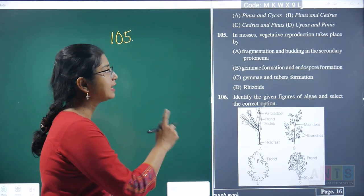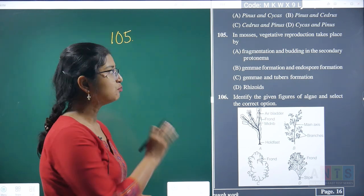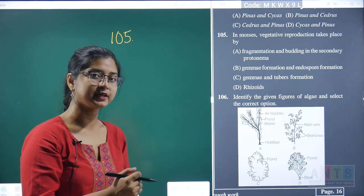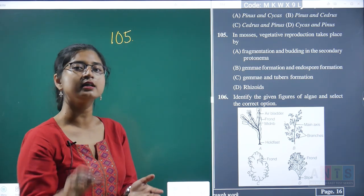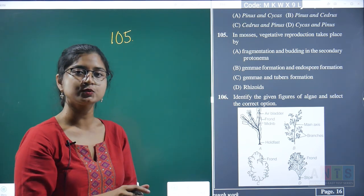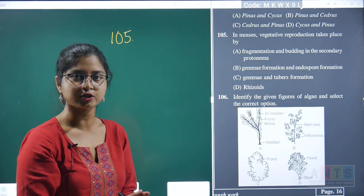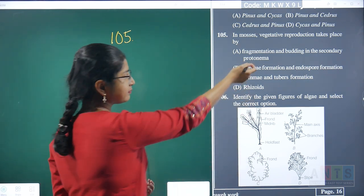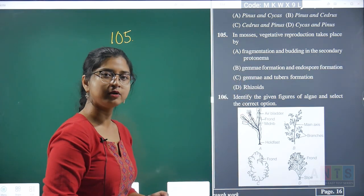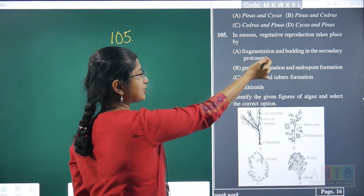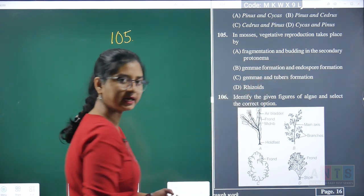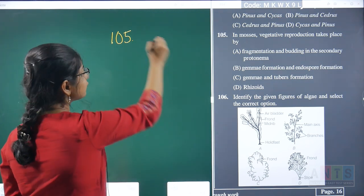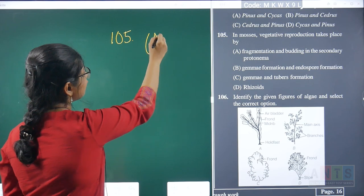Question 105: in mosses, vegetative reproduction takes place by its protonema. Specifically, when the protonema develops into the secondary protonema stage, structures involved in vegetative reproduction are formed. Secondary protonema can undergo vegetative propagation using fragmentation and budding. So option A, which brings together these points, is the correct answer for question 105.